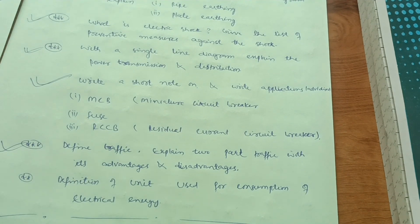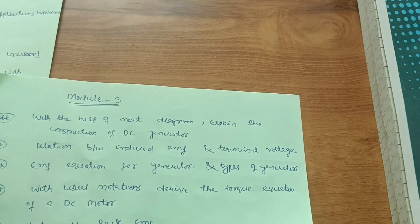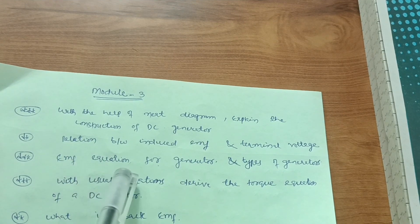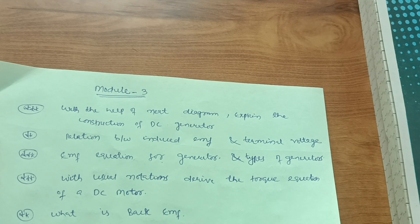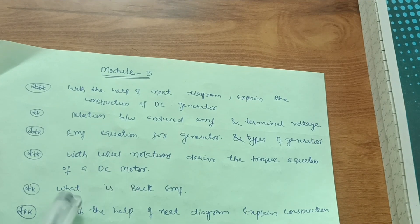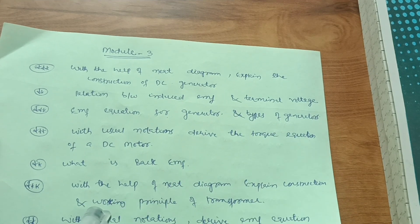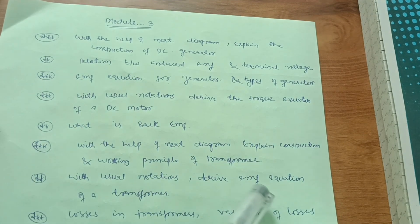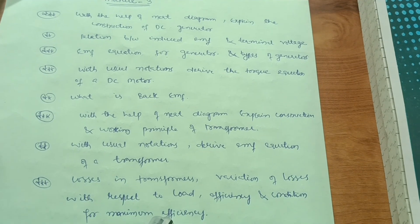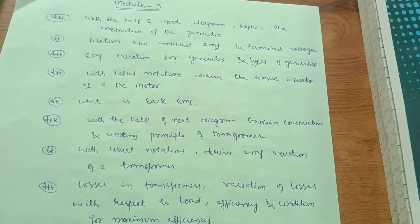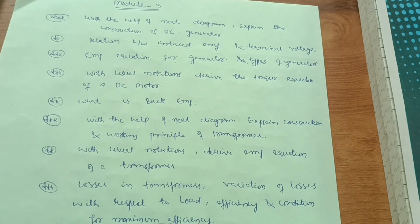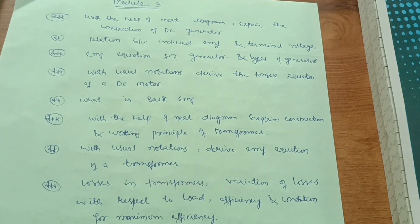Module 3 is also a simpler one. With a neat diagram, explain the construction of a DC generator, the relation between induced EMF and terminal voltage, the EMF equation for a generator, and types of generators. With usual notations, derive the torque equation of a DC motor. Also explain what back EMF is. With a neat diagram, explain the construction and working principle of a transformer, derive the EMF equation of a transformer, and cover losses, variation of losses with load, efficiency, and condition for maximum efficiency.